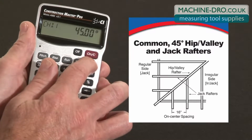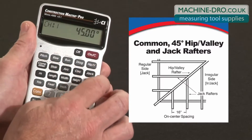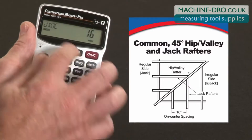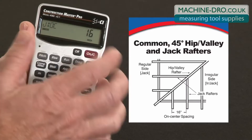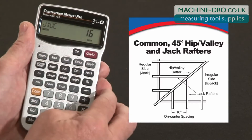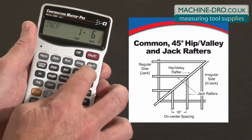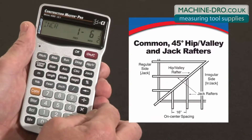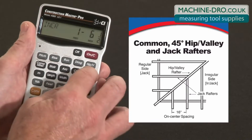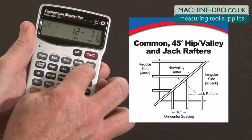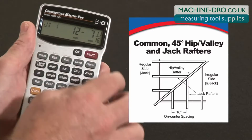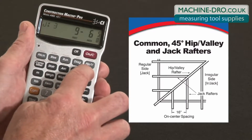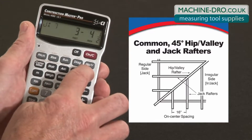The cheek cut's going to be forty-five degrees since this is a regular hip or valley. Now pressing the jack rafter key shows a couple of things. The first press shows that our on-center spacing is stored — the default is sixteen inches. You can change that to whatever you want, but for this example that'll work. The next press shows the increment — that's the amount of change in length from one jack to the next. Starting from the common, jack number one is going to be twelve feet, seven and eleven-sixteenths. Repeated presses of this key gives us the length of each and every jack all the way down to the corner.